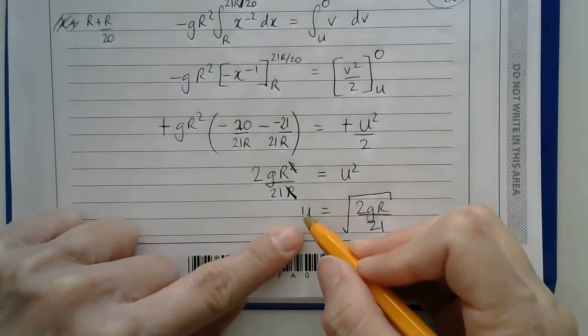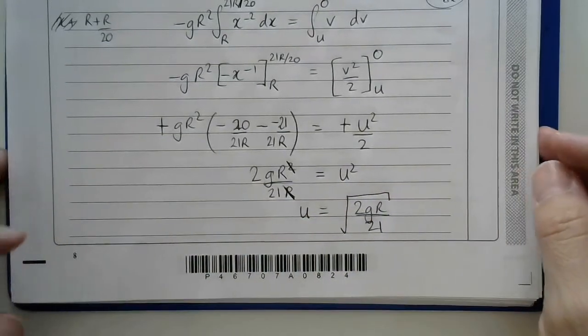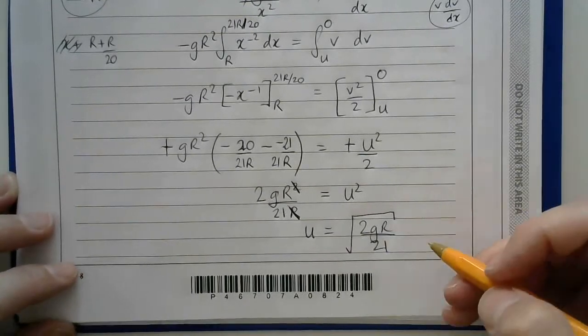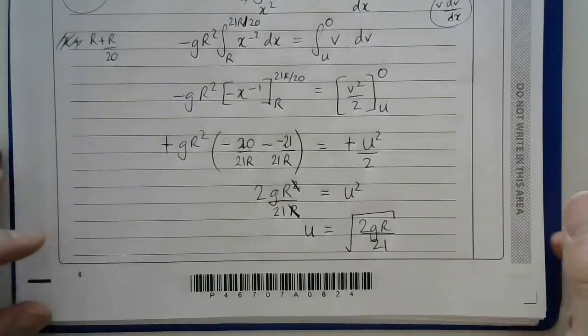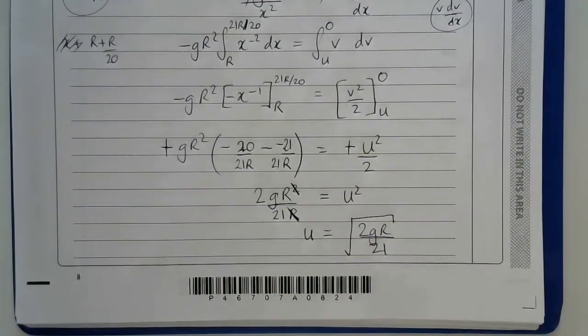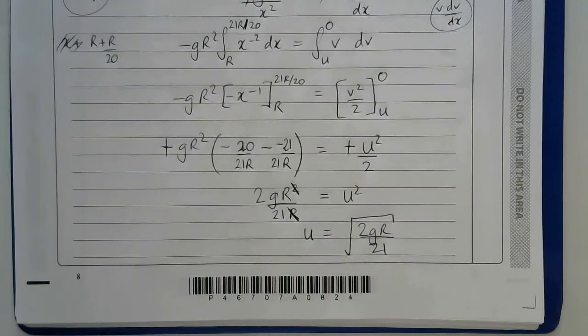Okay, and this gives you the initial speed, u, which is the speed with which it was fired. Okay, so that part of the question is worth 7 marks. I hope you found that solution helpful. Do click like if you like this video, and good luck with your studies.